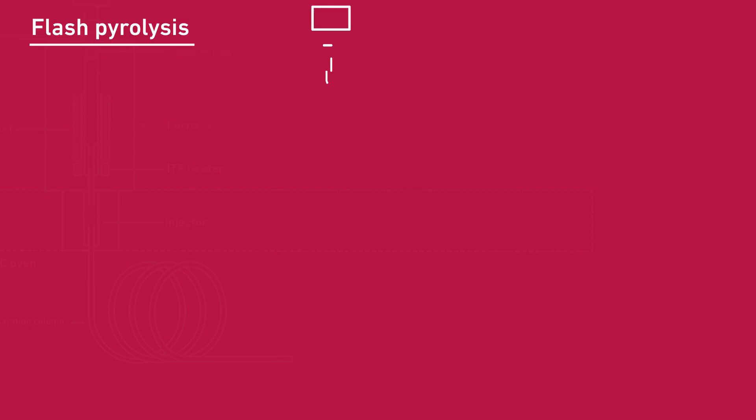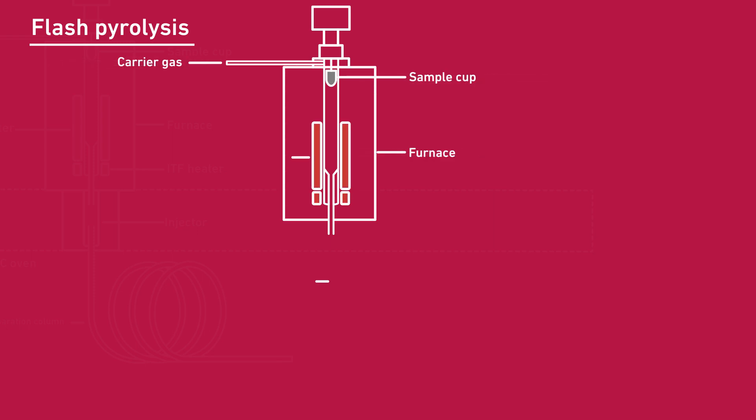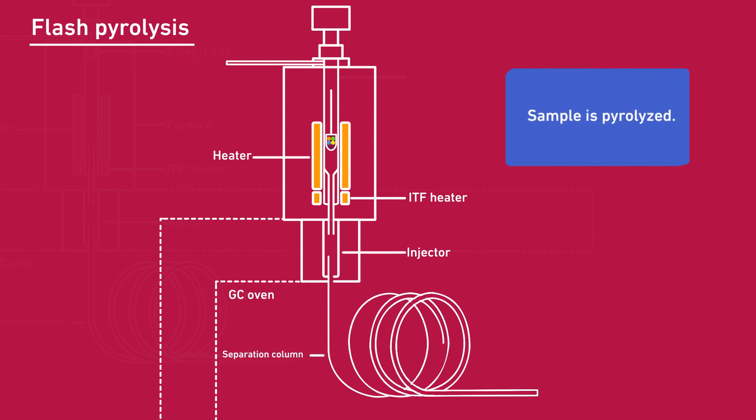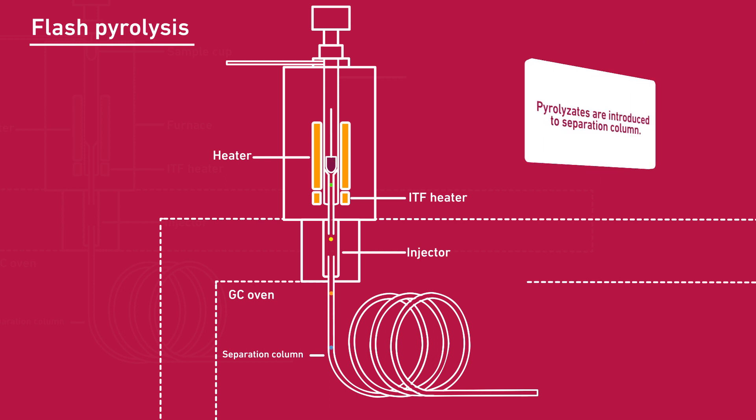The pyrolyzates are directly swept onto the gas chromatography analytical column for separation and detection by a mass spectrometer or any other detector. This single step process of the Micro Furnace allows low and high molecular weight, as well as polar compounds, to be detected and analyzed.